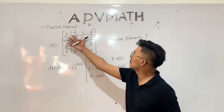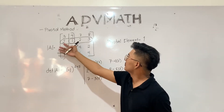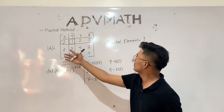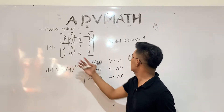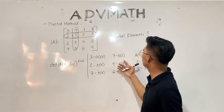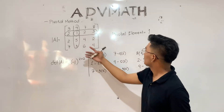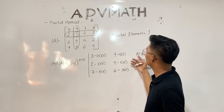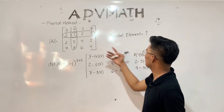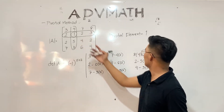So we will get: 3 minus 4 multiplied by 2, 2 minus 5 multiplied by 2, 7 minus 3 multiplied by 2, 7 minus 4 multiplied by 2, 4 minus 5 multiplied by 2, 6 minus 3 multiplied by 2, 8 minus 4 multiplied by 3, 2 minus 5 multiplied by 3, and 4 minus 3 multiplied by 3.